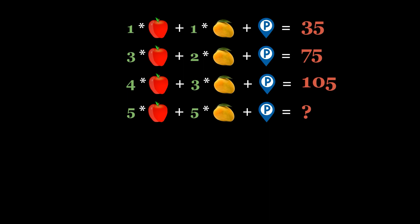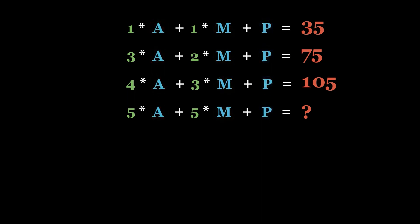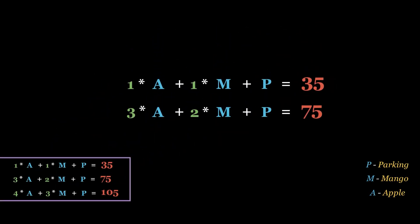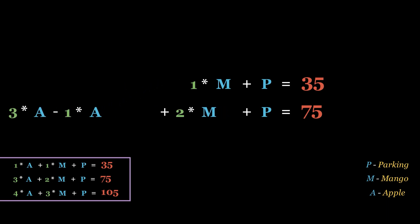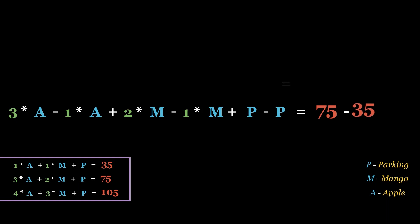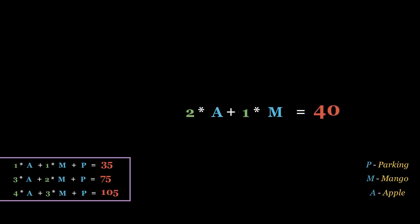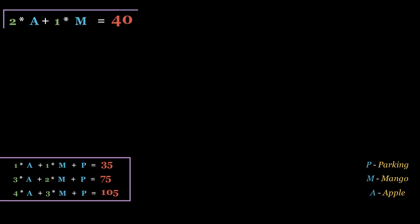The approach to solving these three-variable equations is to reduce them into two variables, then reduce the two equations into one and solve it. Let's rewrite these equations first, and then subtract the first equation from the second equation. We get 2a plus 1m equals 40.